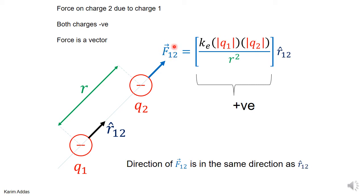So that means that the direction of the force on Q2 due to 1 will be a positive number. It's obtained from a positive number multiplied by this unit vector. That means it's going to be in the direction of this unit vector. And the unit vector points from charge 1 to charge 2, so that means the force points from charge 1 to charge 2. It points away from charge 1.